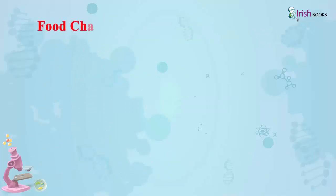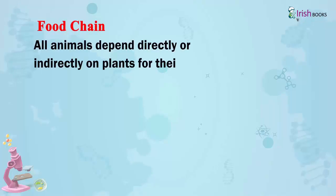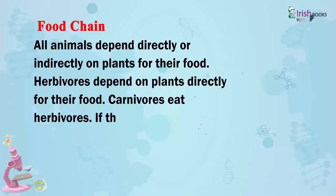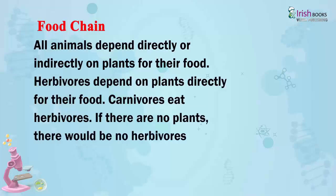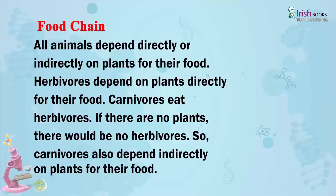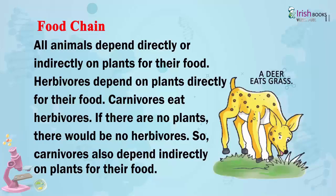Food Chain. All animals depend directly or indirectly on plants for their food. Herbivores depend on plants directly for their food. Carnivores eat herbivores. If there are no plants, there would be no herbivores. So carnivores also depend indirectly on plants for their food.